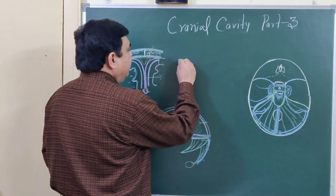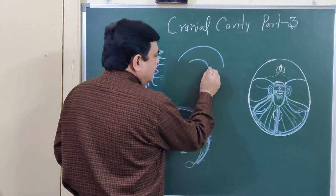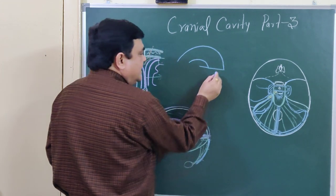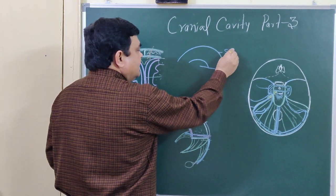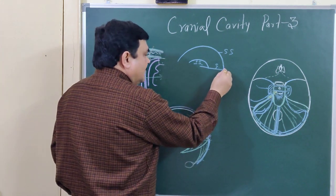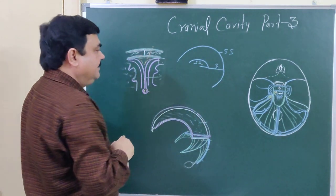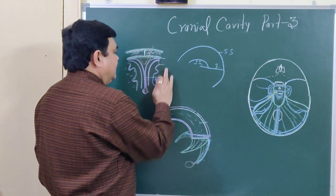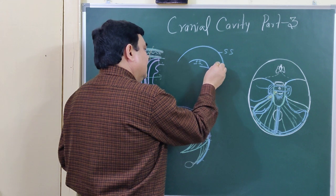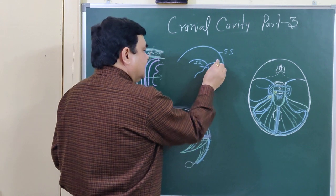Here you can see in this diagram, in a simplified way: this is the superior sagittal sinus, here is the inferior sagittal sinus, and here is the great cerebral vein. These join to form the straight sinus. This is the straight sinus. Here is the occipital sinus. These sinuses are unpaired sinuses.